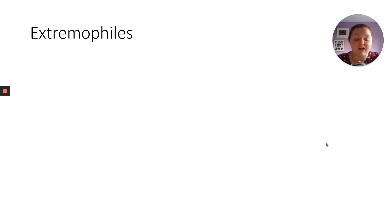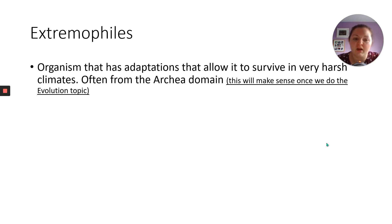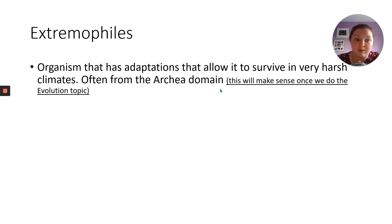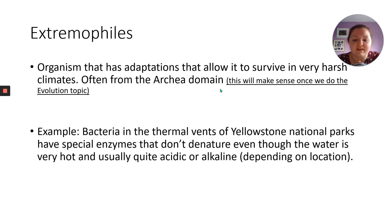Extremophiles are organisms adapted for very harsh, extreme climates — often from the Archaea domain, which will make more sense after you've covered evolution and genetics. That topic has appeared in two questions about extremophiles and their domain across three years of papers, so it's worth knowing. An example is bacteria in thermal vents — for instance in Yellowstone Park. They have special enzymes that don't denature even when water is very hot, or at extremes of acid or alkaline. Whether it's acid or alkaline depends on the type of rock the geyser is near.